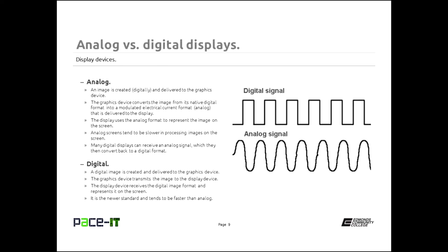Now let's talk about some of the differences between analog and digital displays, starting with analog. An image is created digitally on your computer and your PC delivers that to your graphics device, usually a graphics card. If you're using an analog monitor, the graphics device converts that image from its native digital format into a modulated electrical current format — that's the analog signal that's delivered to the display. The display then uses the analog format to represent the image on the screen. Analog screens tend to be slower in processing images, which means they're not as good for video or video editing — you can get some jitters.